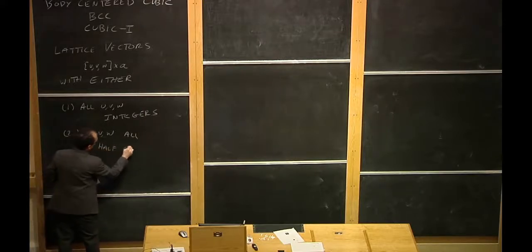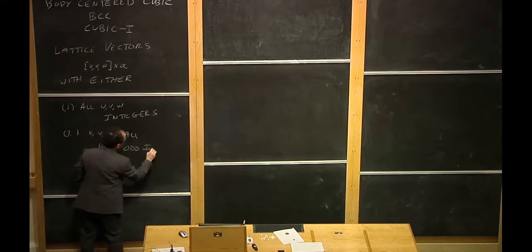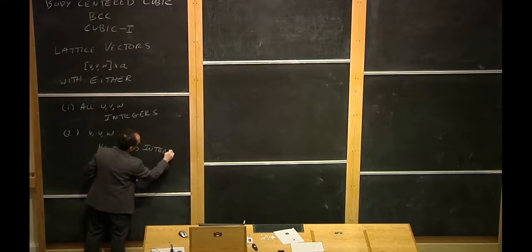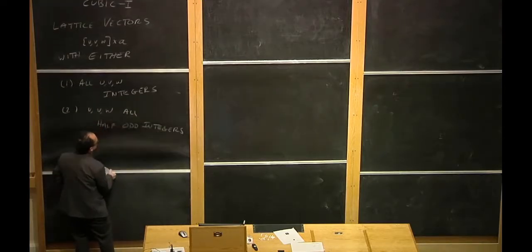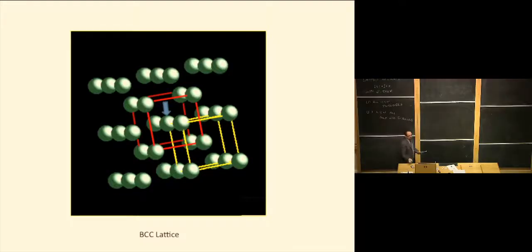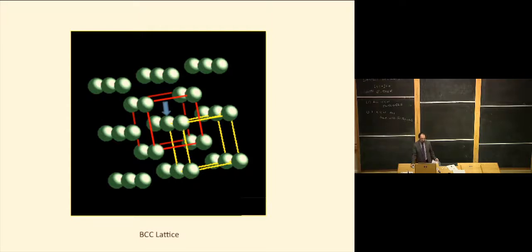Half-odd integers means 1/2, 3/2, 5/2, and so forth. That corresponds to the lattice points in the center of the cube. For example, this point here would have coordinates (1/2, 1/2, 1/2). This one would be (1/2, 1/2, 1/2), this one (1/2, 3/2, 1/2), and so forth.